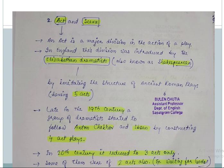They include William Shakespeare, Ben Jonson, Christopher Marlowe, Thomas Kyd, and other University Wits. They imitated the structure of ancient Roman plays having five acts. That is, during the Elizabethan age, the plays consisted of five acts.